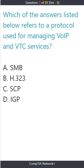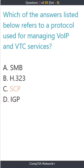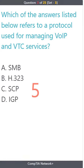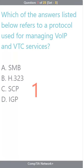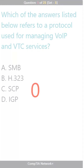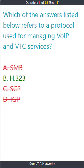Question 3. Which of the answers listed below refers to a protocol used for managing VoIP and VTC services? A. AMP. B. H.323. C. CCPA. The correct answer is B. H.323.